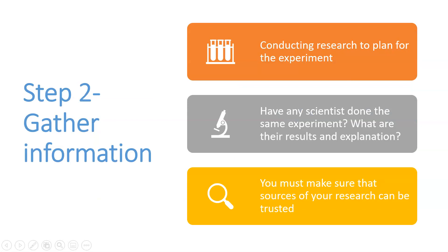Step two is gather information. In this step, you conduct a research and check whether any other scientist has already done this experiment — if they have, what result they got and what explanation they gave. You collect all the information about the problem you want to study and investigate. Make sure you depend only on trustable resources.